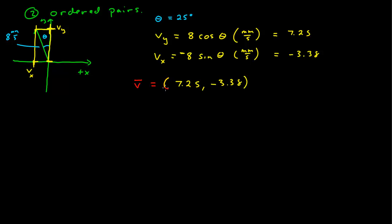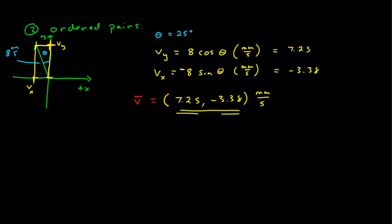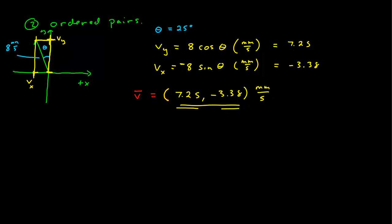It makes sense to call this a component form, but we'll call this the ordered pair form — it's the ordered pairs that give us the coordinates of the tip of the vector if the tail is at the origin. It still has units of millimeters per second. The components can be positive or negative because they represent x and y coordinates, and it's important not to confuse your components with things like the magnitude in the descriptive representation.